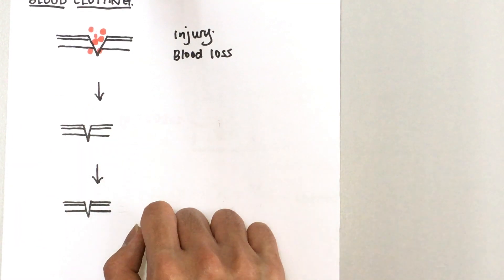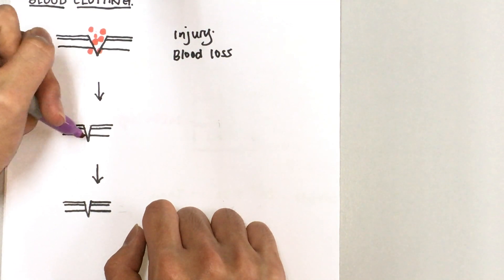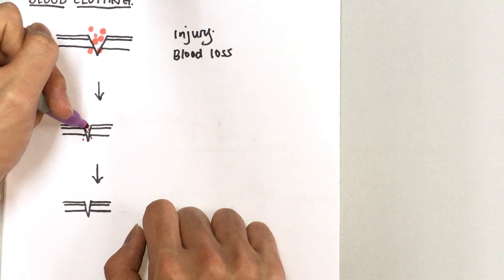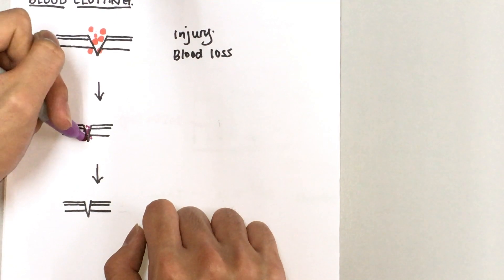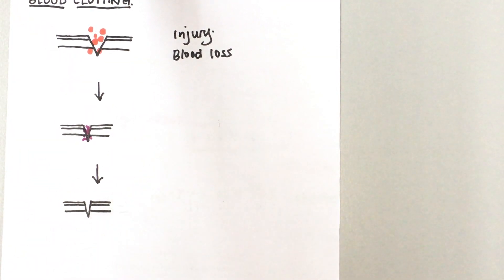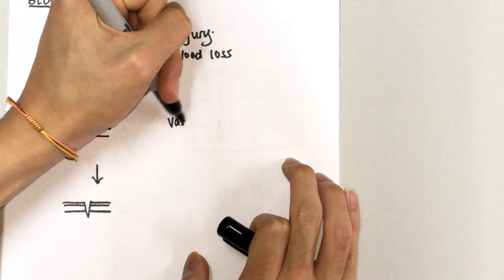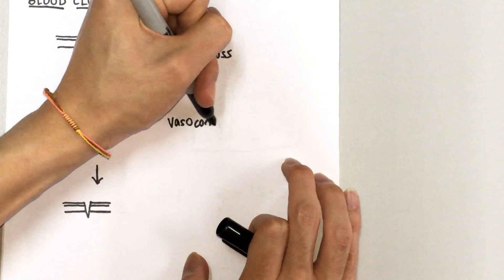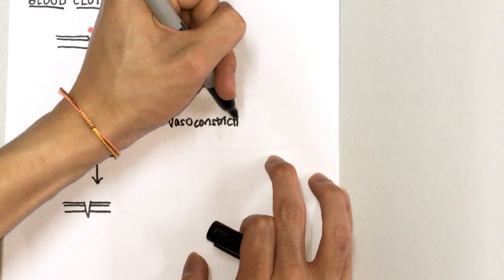at the same time, what happens is your platelets found in your bloodstream will form a plug to plug up the wound to prevent blood from escaping. Alright, so here we have what we call vasoconstriction, which is the...